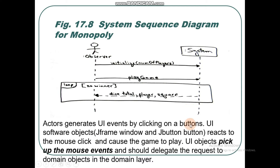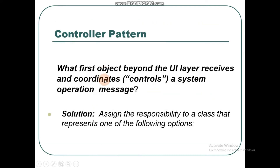User interface objects pick up the mouse events and should delegate the request to domain objects in the domain layer. There are two layers: the UI layer and the domain layer. UI objects pick up the mouse events and need to delegate to the domain layer.